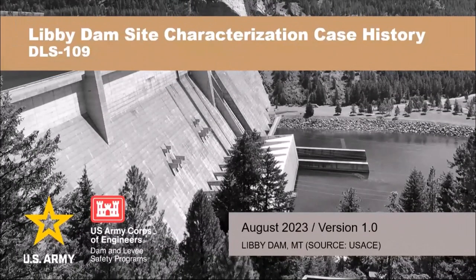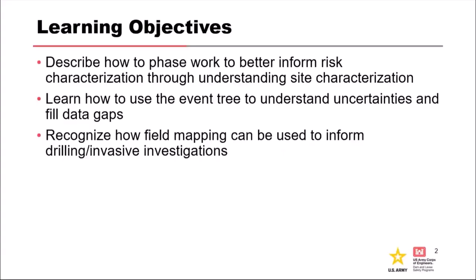So now you get to hear more about Libby and how we will eventually get to the field investigation part. Our learning objectives are to describe how to phase work to better inform risk characterization through site characterization. We'll learn how to use the event tree to understand uncertainties and use that to fill data gaps and build a field investigation plan. I usually stop and take a look at the event tree to help me scope anything that I'm doing.